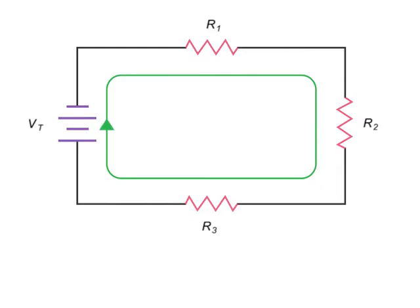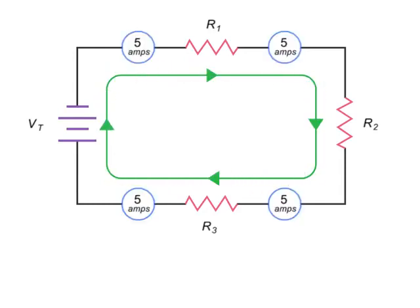For instance, if the source current in a series circuit is 5 amps, then no matter where along the circuit you take an ammeter reading, it will also register 5 amps.